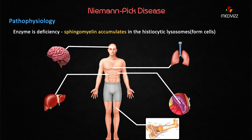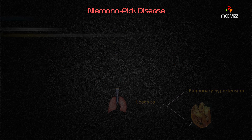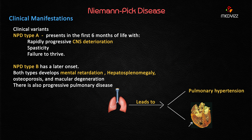The organs involved in Niemann-Pick disease are the brain, liver, spleen, bone marrow, and lung. Accumulation of foam cells in these organs leads to their dysfunction.